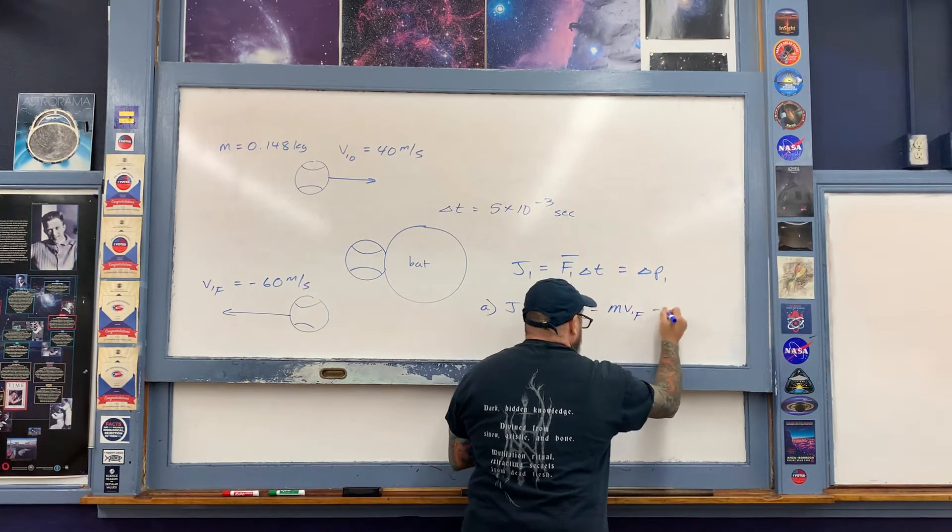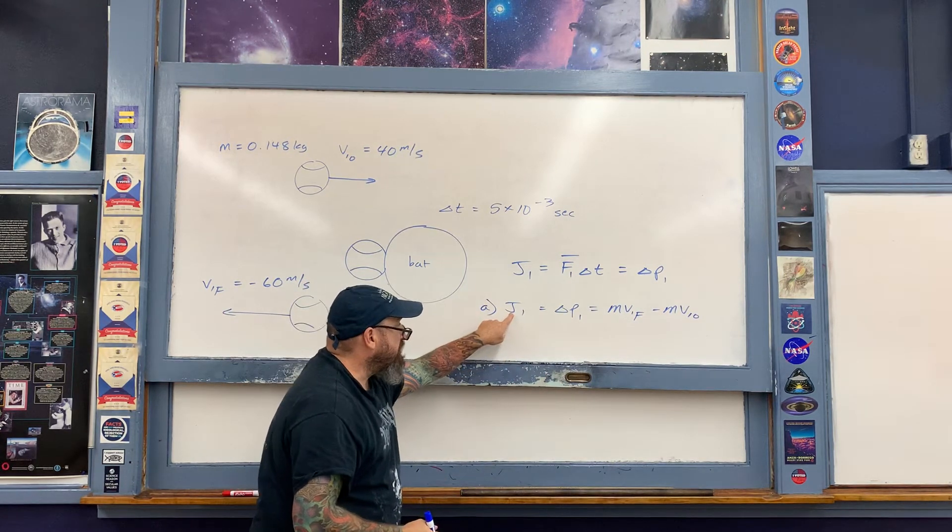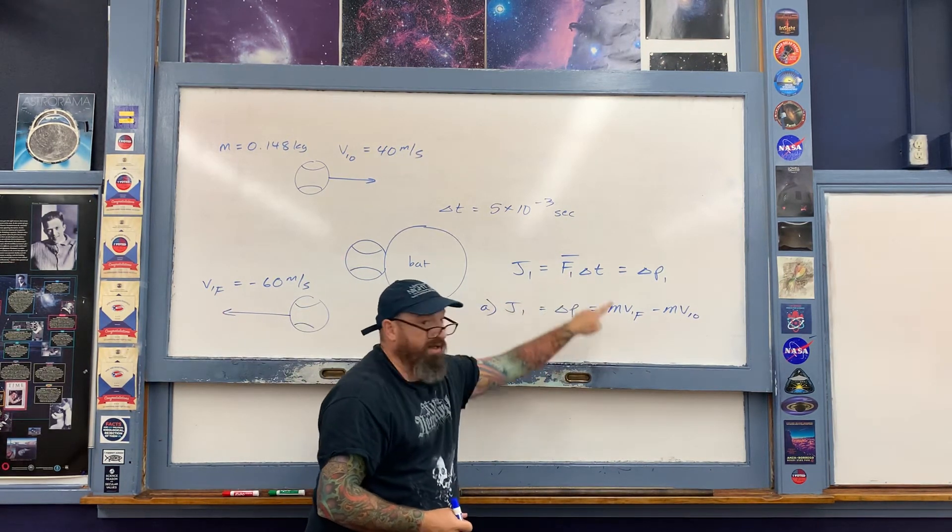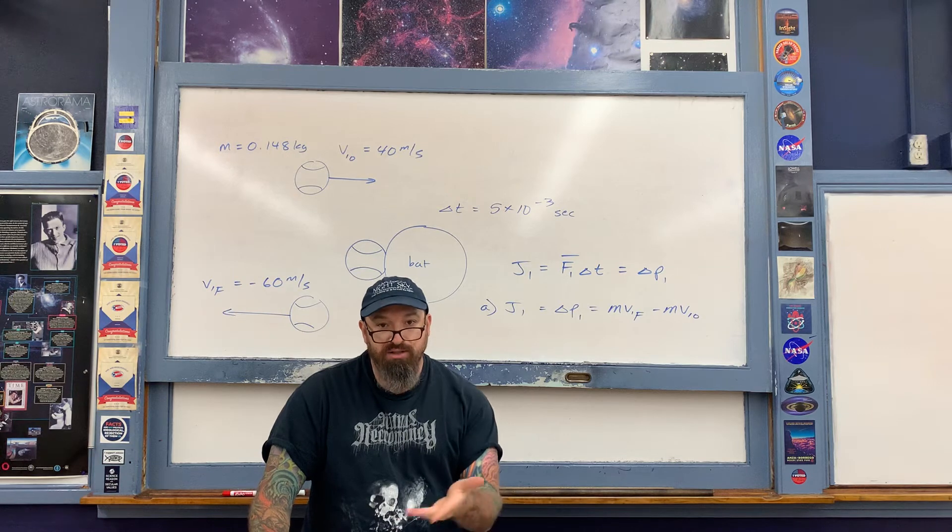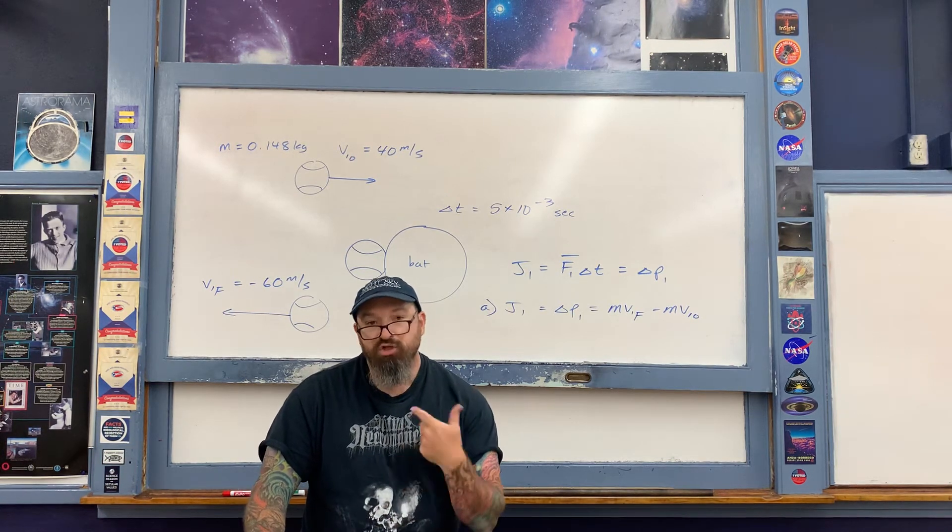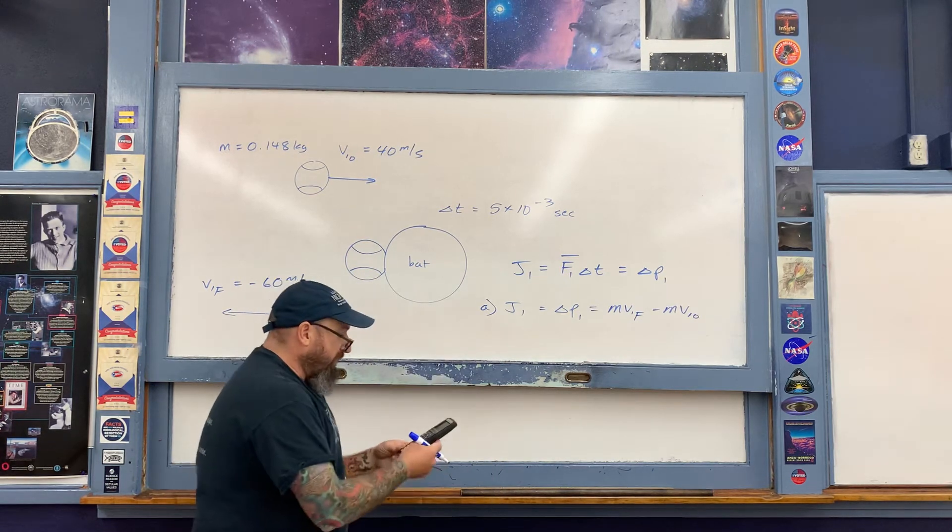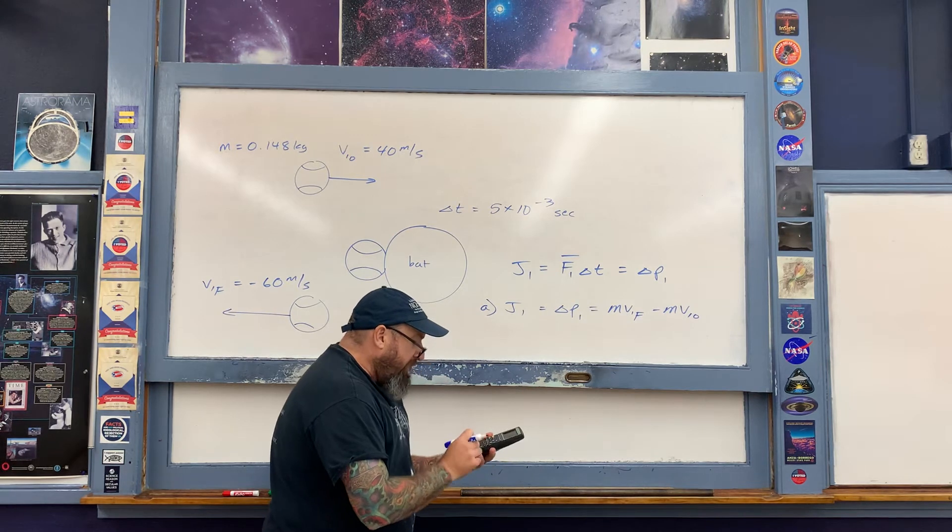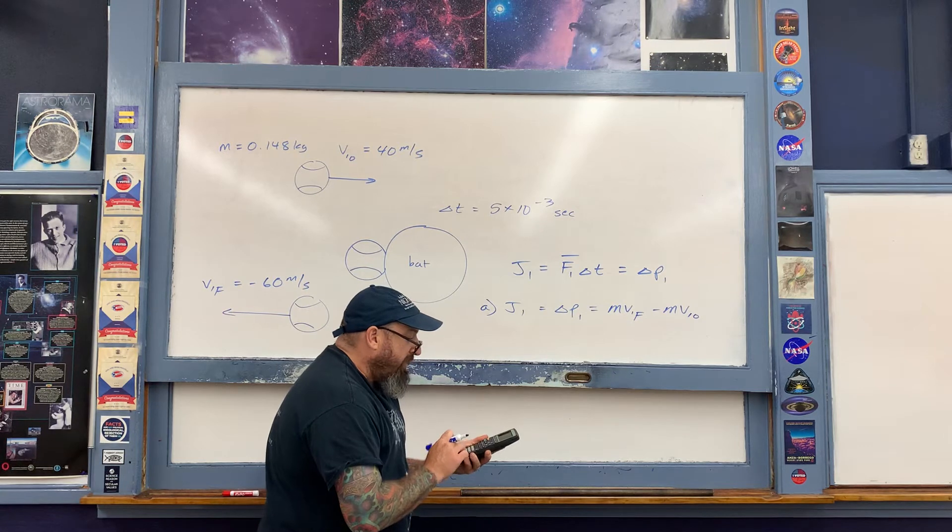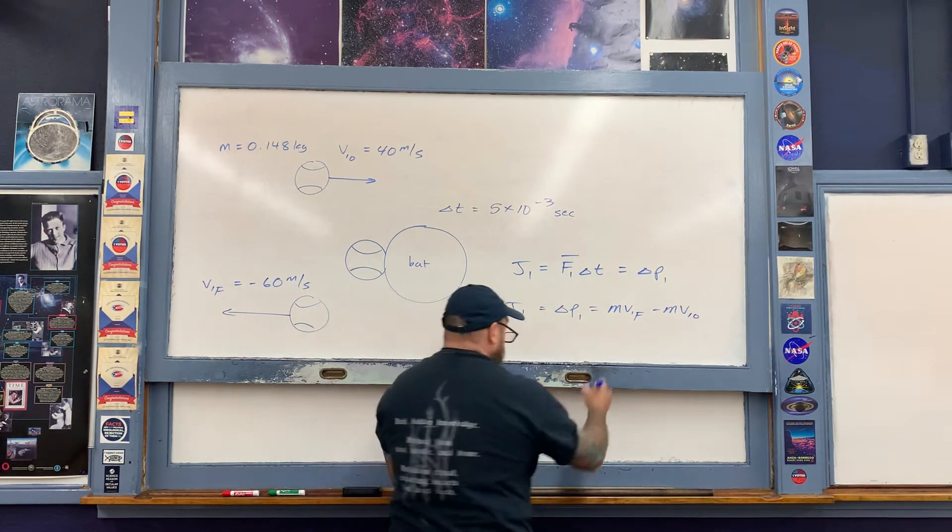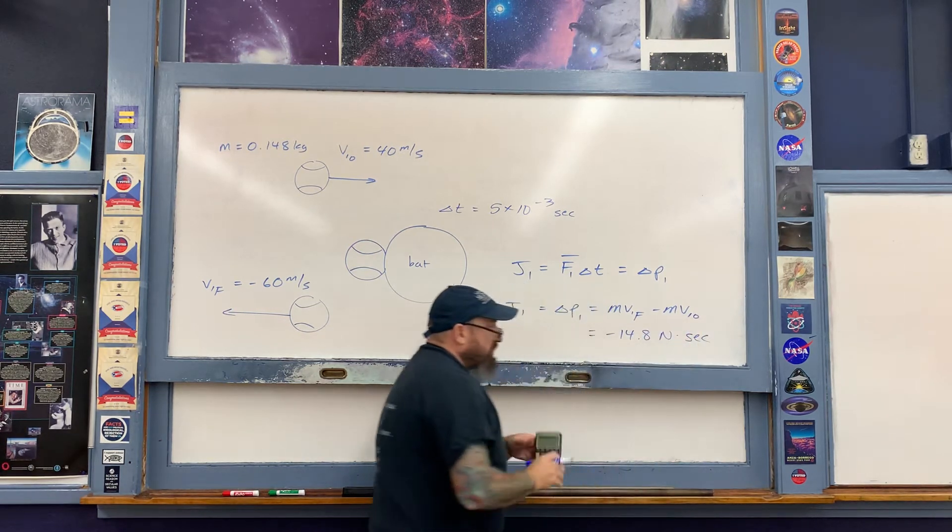For part A, J equals the change in momentum of the ball, so you do final momentum minus initial momentum. Let's calculate it now. I have 0.148 multiplied by (negative 60 minus 40). When I do the math, I end up with a reasonable number: negative 14.8 newton seconds. We end up with units in terms of newtons multiplied by seconds.